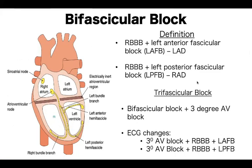We must also be able to recognize bifascicular block, in which case you see right bundle branch block combined with either left anterior fascicular block or left posterior fascicular block. You identify right bundle branch block, but also see axis deviation — left or right — suggesting a bifascicular block. Trifascicular block, though somewhat a misnomer with limited clinical implication, is essentially a combination of third-degree block with either of these bundle branch blocks.